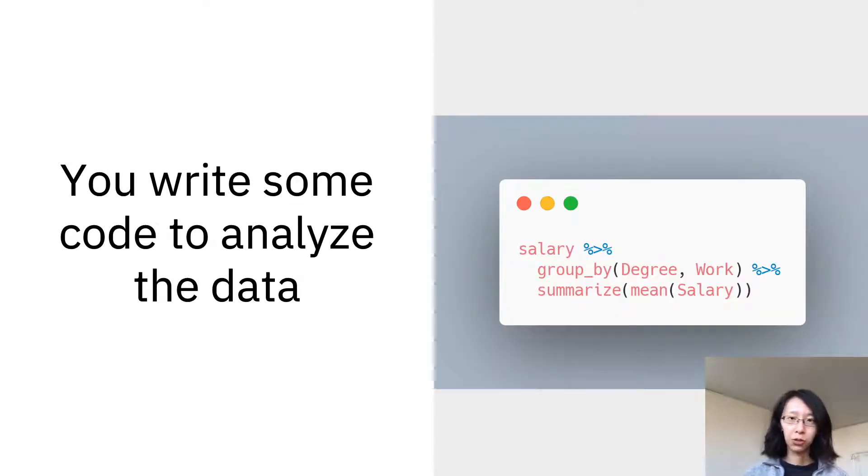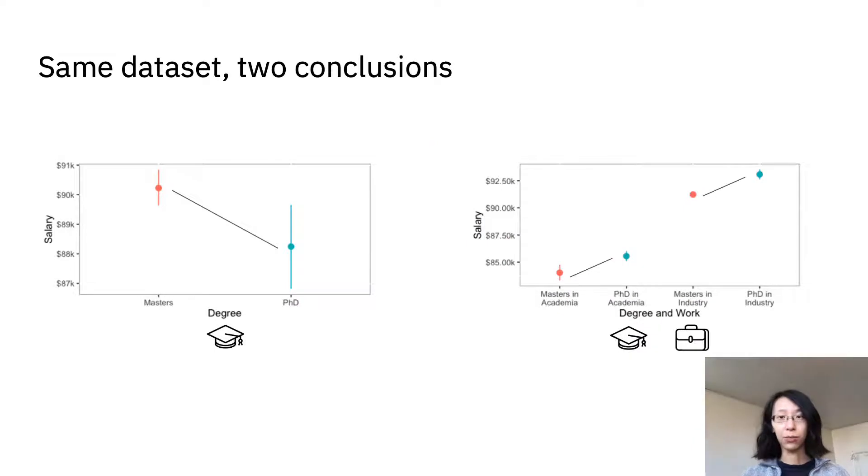And you wrote some code and got two plots from the same dataset. But there's a problem. On the left, if we group by education degrees, masters are making more money on average. But on the right, when we break down the data by both degree and work setting, we see a different reverse trend.